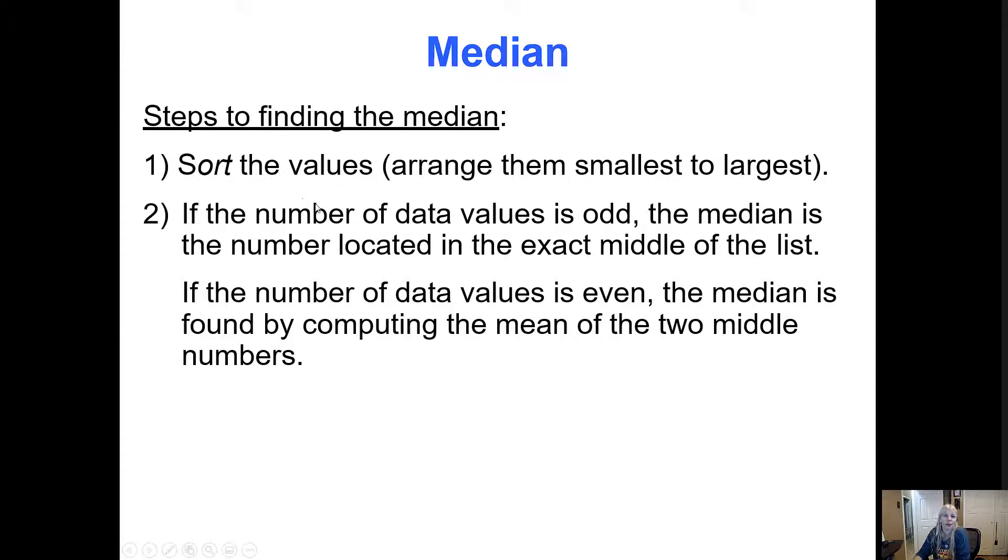A lot of times the median is what's reported because it's not affected by outliers. So it's still just that middle value. Usually students have issues - and again, we're going to use Google Sheets - but if you do this manually, they forget to put them in order. And then it's the actual middle value. If there's not an exact middle value, meaning there's an even number of values, you take the two middle values and you just average them.